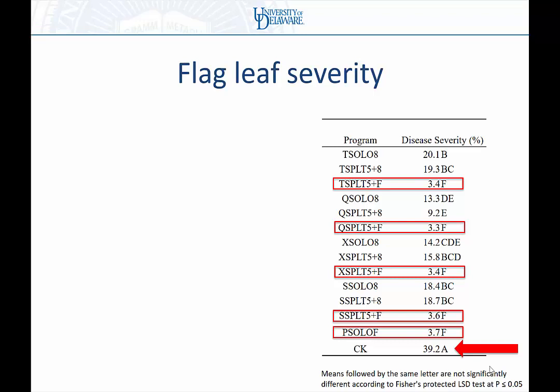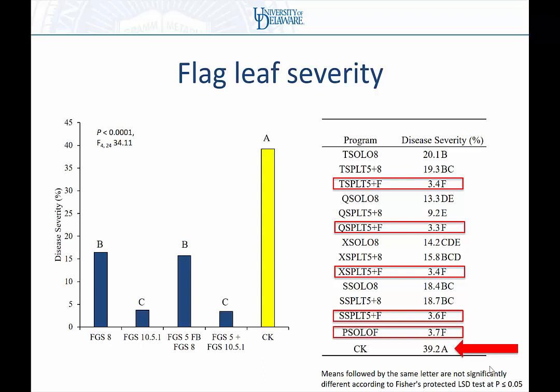Collapsing the individual programs down to application timings to compare flag leaf, flowering, early plus flag leaf, and early plus flowering — the flowering timing ended up with the lowest disease on the flag leaf. The addition of the early application really didn't further enhance that reduction on the flag leaf. And the flowering application actually did a better job than the flag leaf application alone, with more disease remaining in the flag leaf timing treatment.